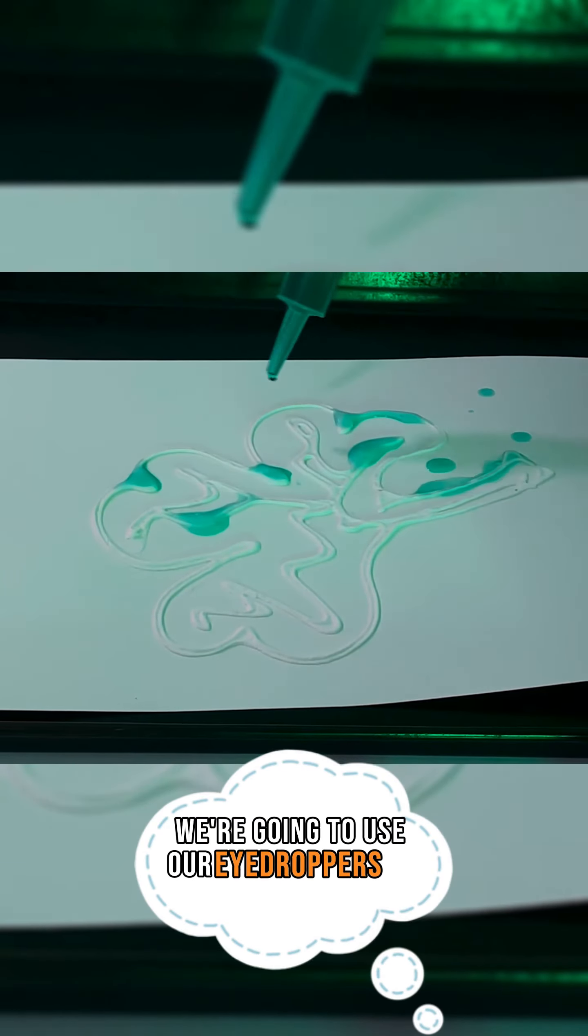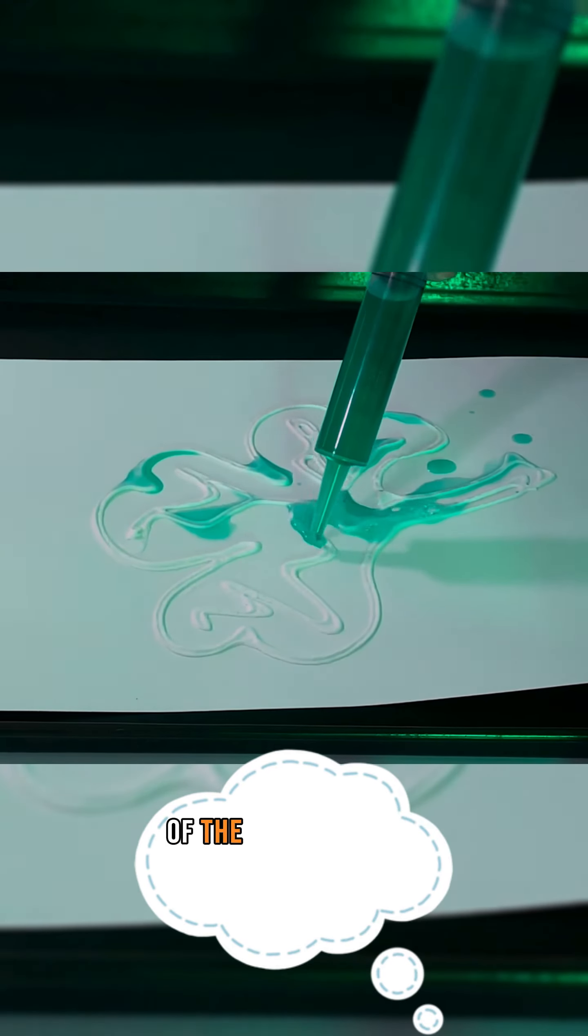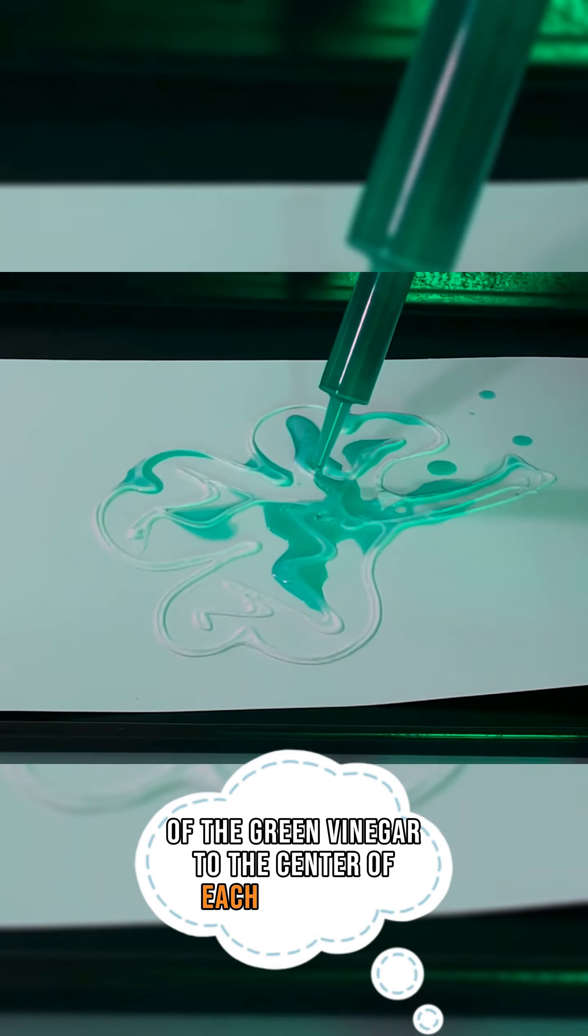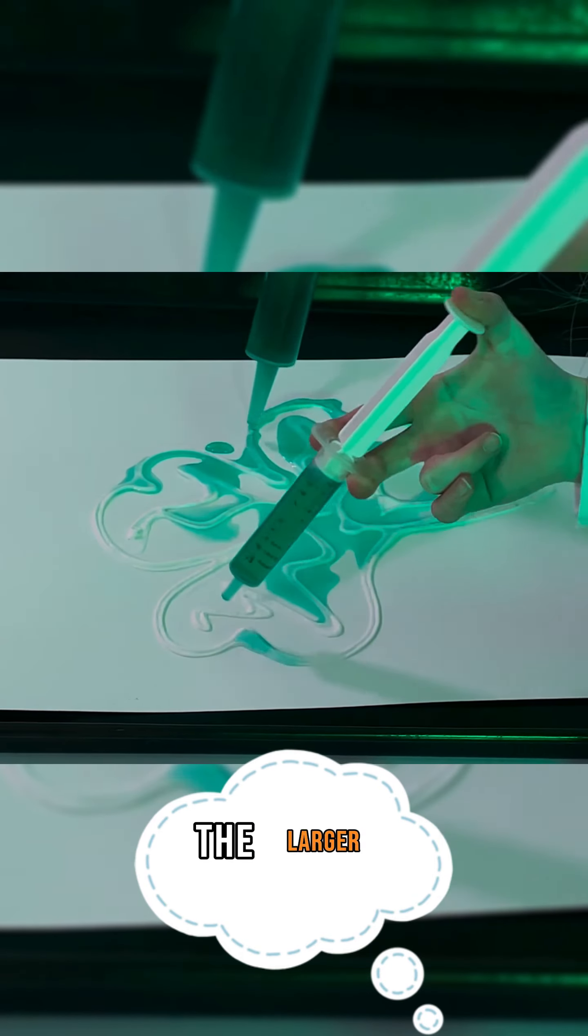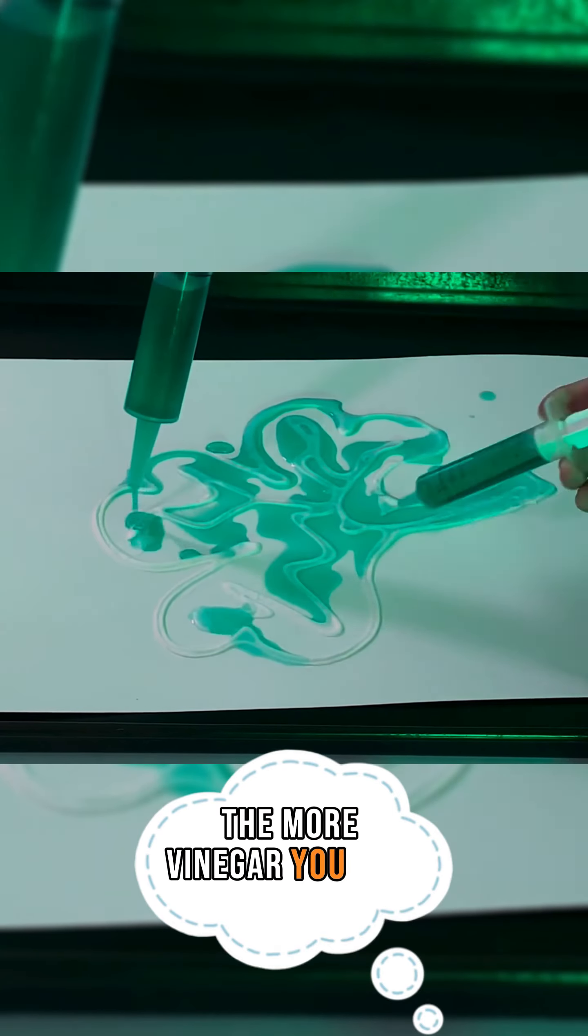We're going to use our eyedroppers to add several drops of the green vinegar to the center of each shamrock. But first, here's a fizz tip. The larger the shamrock, the more vinegar you may need to add.